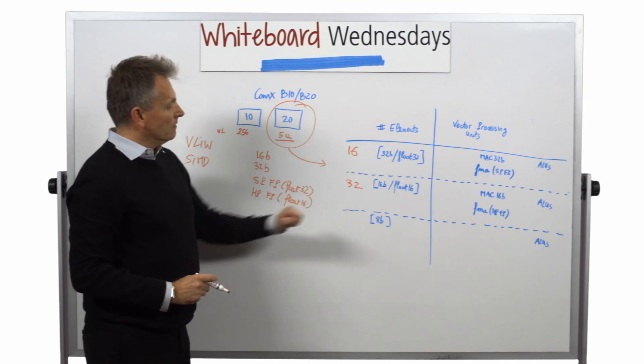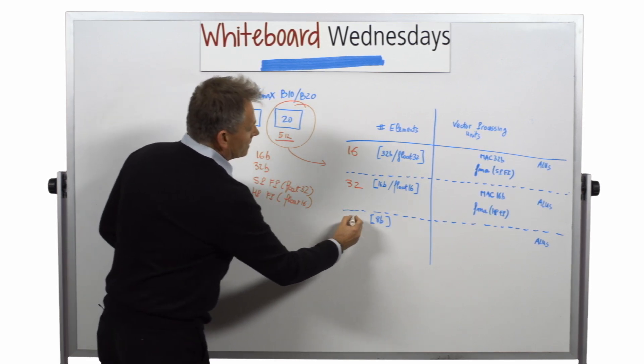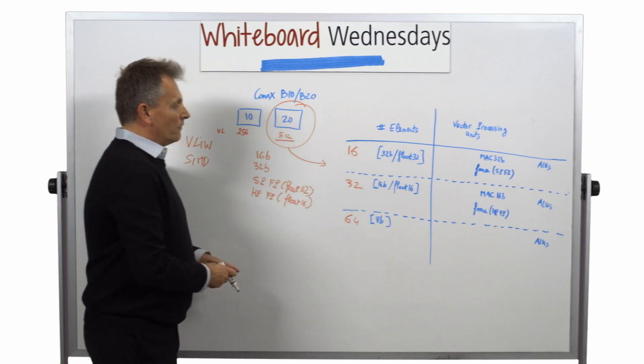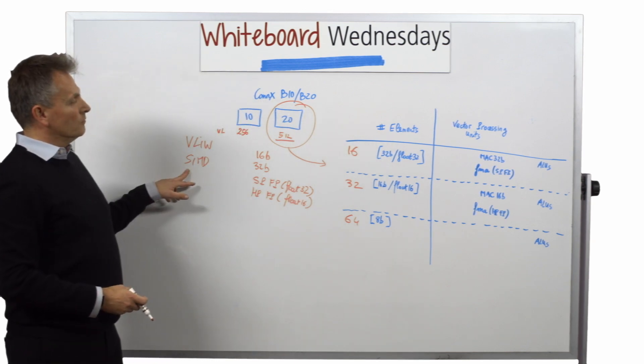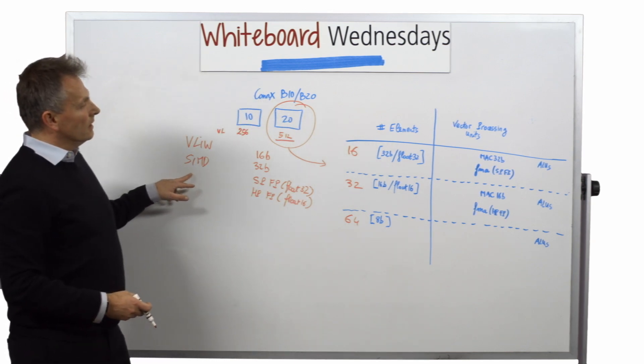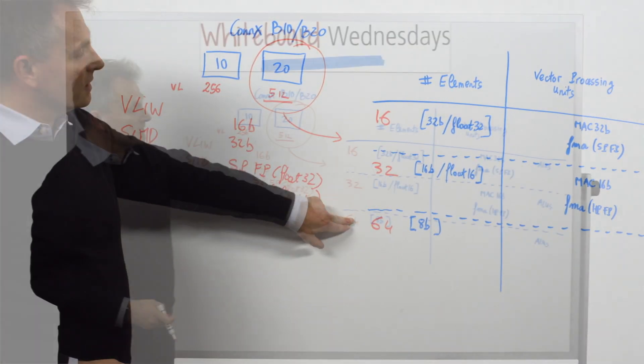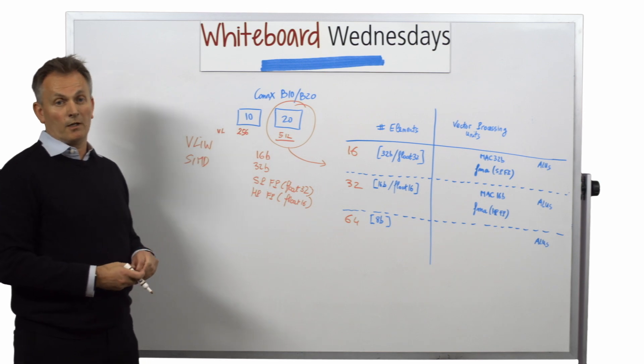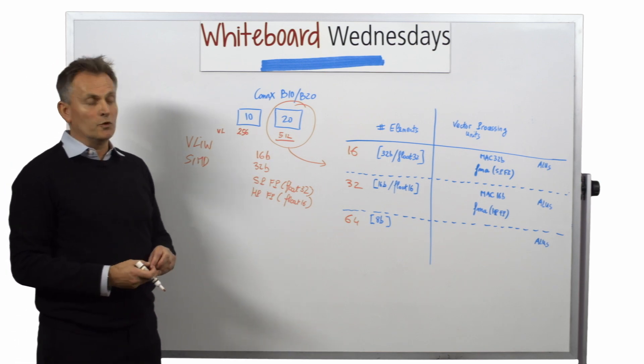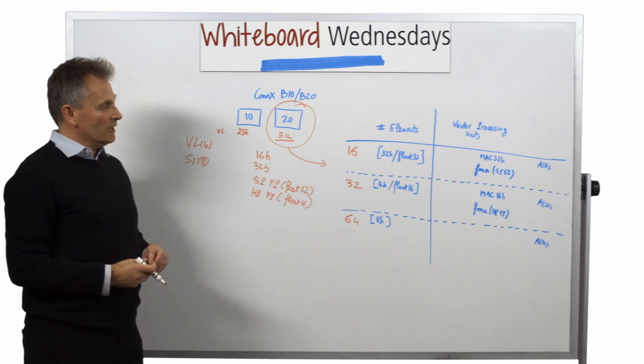And for an 8-bit data types, we will have 64. So in fact, a SIMD instruction will be able to process 16 elements here, 32 16-bit elements or 64 8-bit elements per cycle, meaning this is the throughput capability of the DSP.